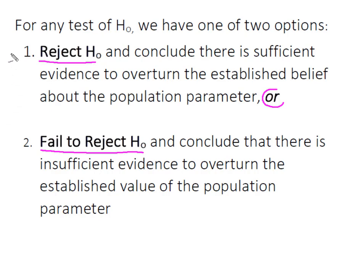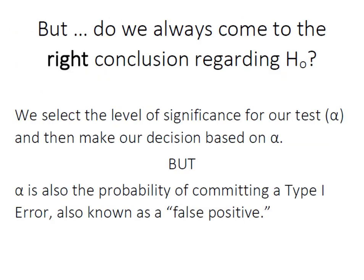So in those cases where H0 is false, we want to reject it. And where H0 is true, we want to fail to reject it. Question becomes, do we always come to the right conclusion regarding H0? The answer to that is no. This is where we get Type I and Type II errors.